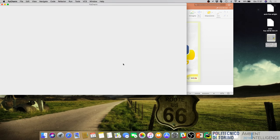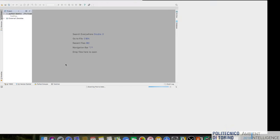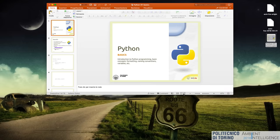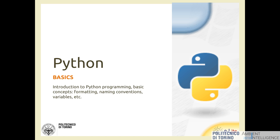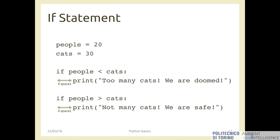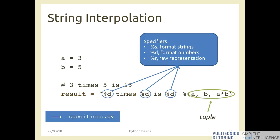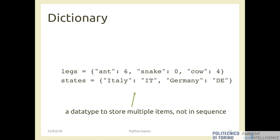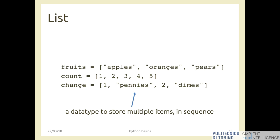I open the same project from the last lecture. Last time we stopped speaking about lists. Just a brief recap: lists are a data type to store multiple items in sequence. In a list you can put strings, numbers, or whatever you want. Every list is indexed by a number, so the first element is index zero, the second is index one, and so on.